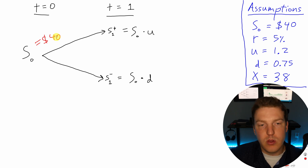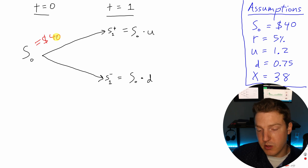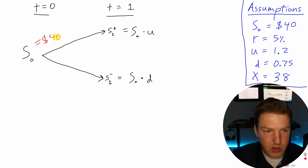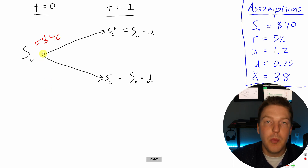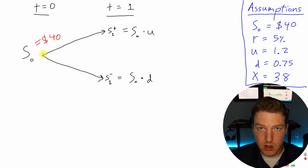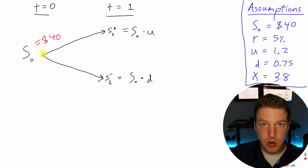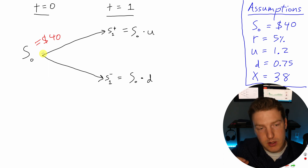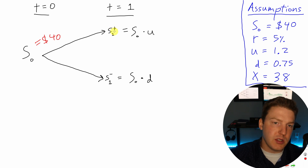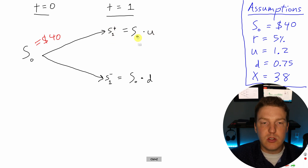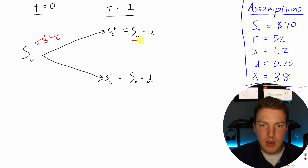The binomial option pricing model makes the assumption that at any given node, the stock has two possible movements it can make: one up and one down. There's only one possible up price and one possible down price. The price in the up scenario, S1+, is equal to S0 times U, the up factor.